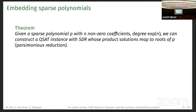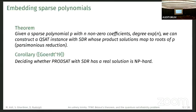What we can also do is to show the hardness results. For some of our NP hardness results, we can embed a sparse polynomial into the system. Given a sparse polynomial with n non-zero coefficients, but the degree can be exponential in n, we can construct a QSAT instance with an SDR such that we can map from product solutions to roots of the polynomial. This is a parsimonious reduction.